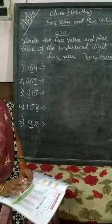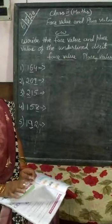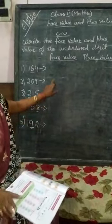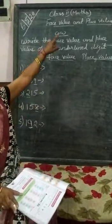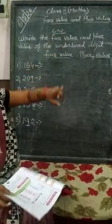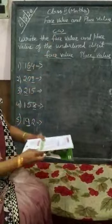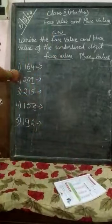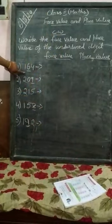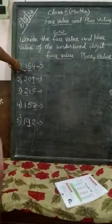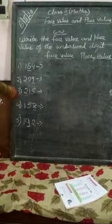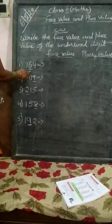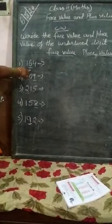Welcome to Online Classes of Class 2nd Maths. Today I will teach you about Place Value. The number we are looking at is 164, where the digit 6 is underlined.